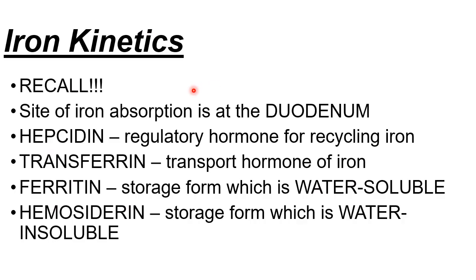Time to recall some important terminologies needed to understand these diseases. The site of iron absorption is at the duodenum. Hepcidin is the regulatory hormone for recycling iron. If there is a low serum iron, hepcidin levels will be increased. Conversely, if there is a high serum iron, hepcidin levels will be low. Transferrin is the transport protein of iron, while the storage forms are ferritin, which is water-soluble, and hemosiderin, which is water-insoluble.